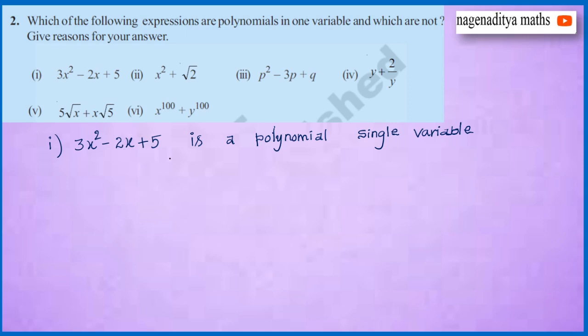The next second one is x square plus root 2. If you observe, there is only one variable in this polynomial. Therefore, it is a polynomial in a single variable.